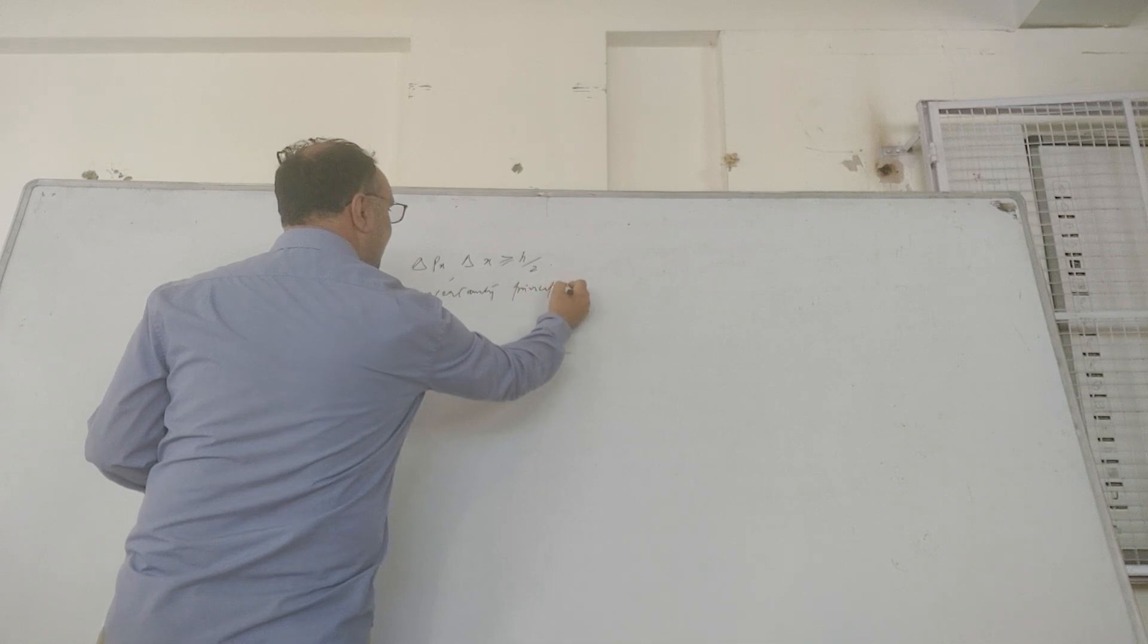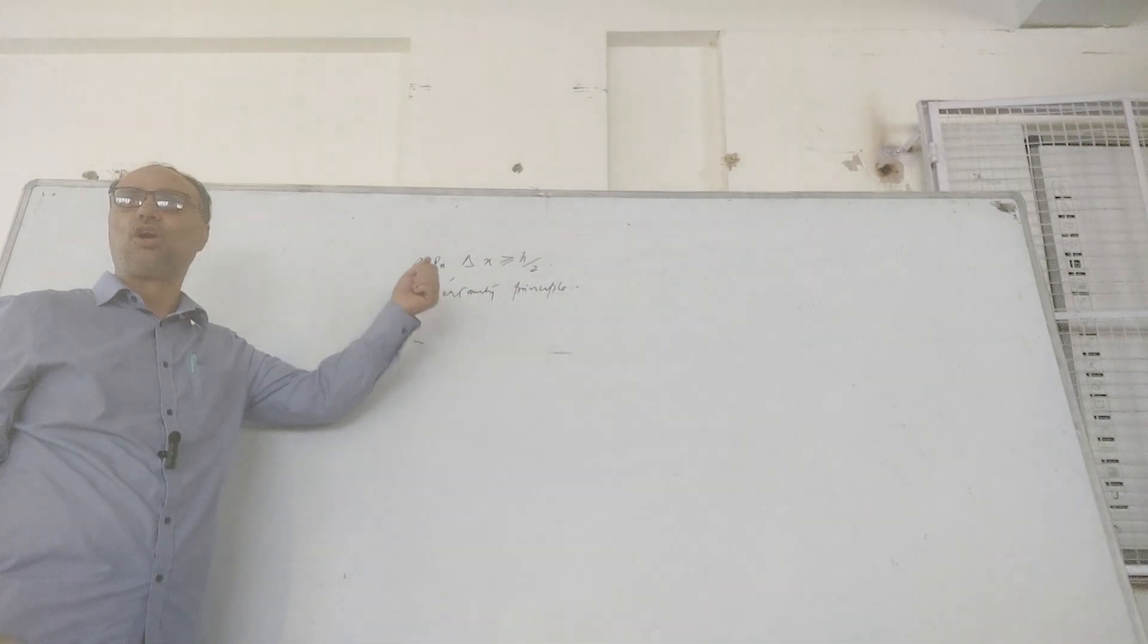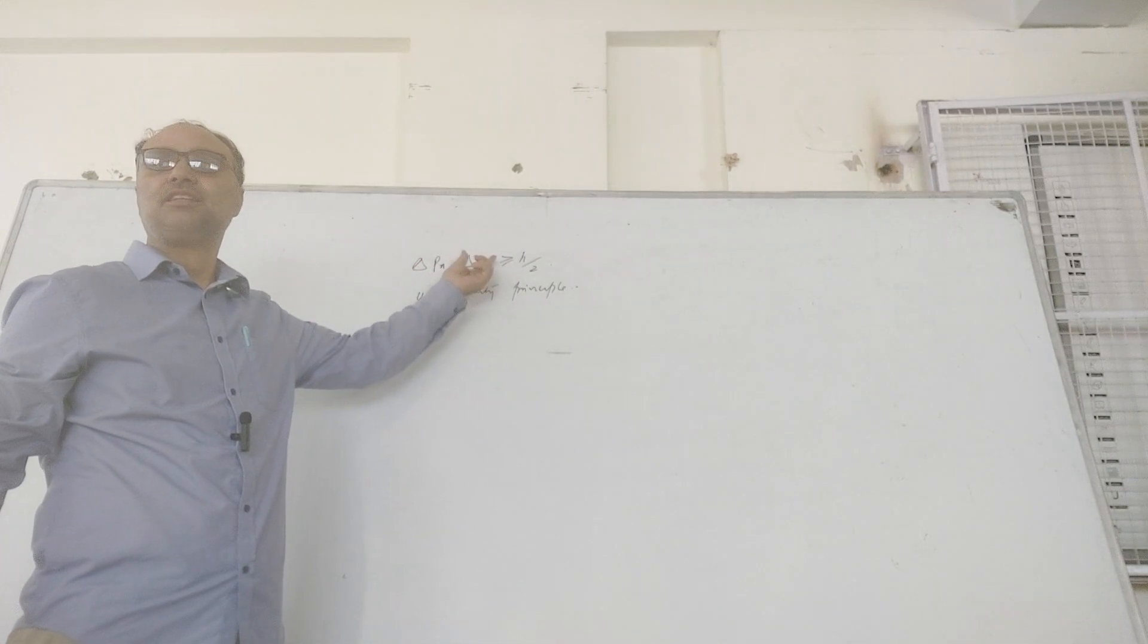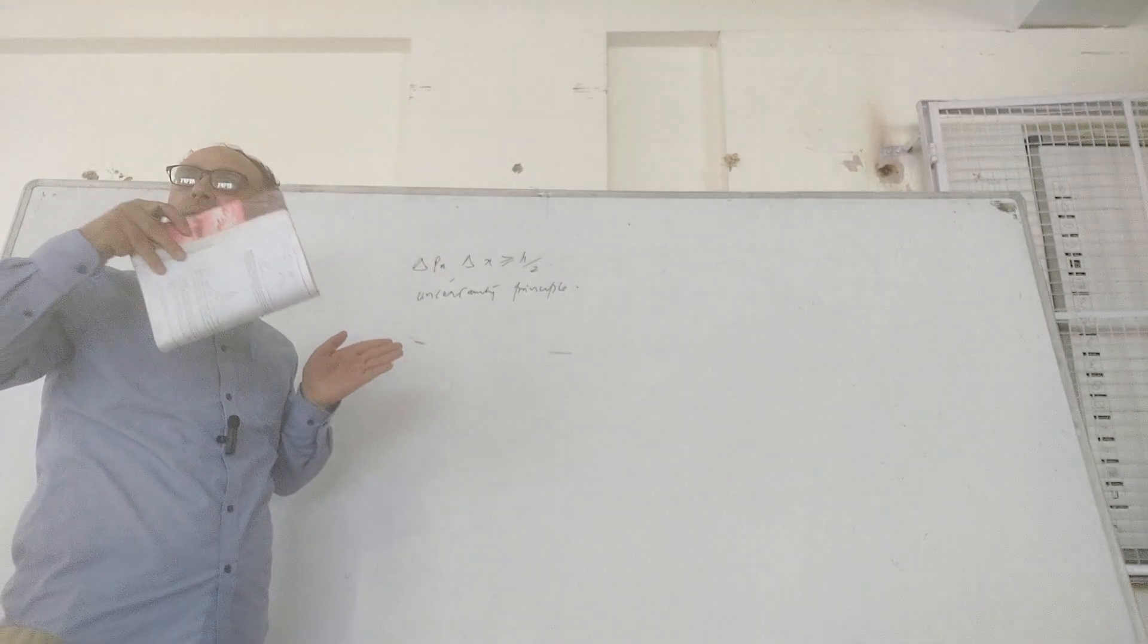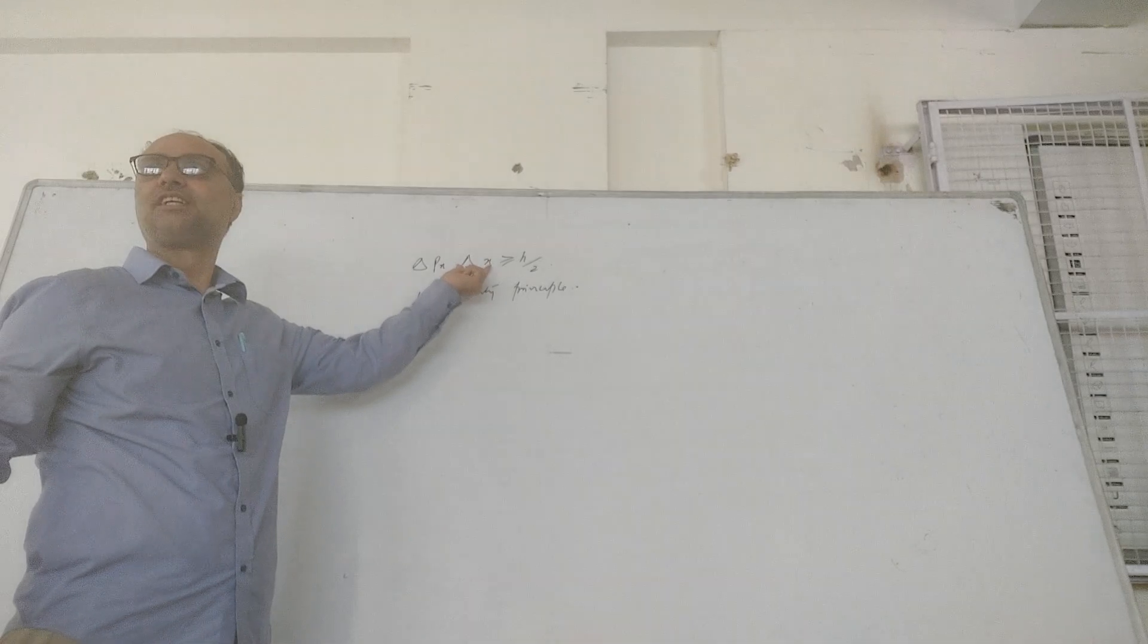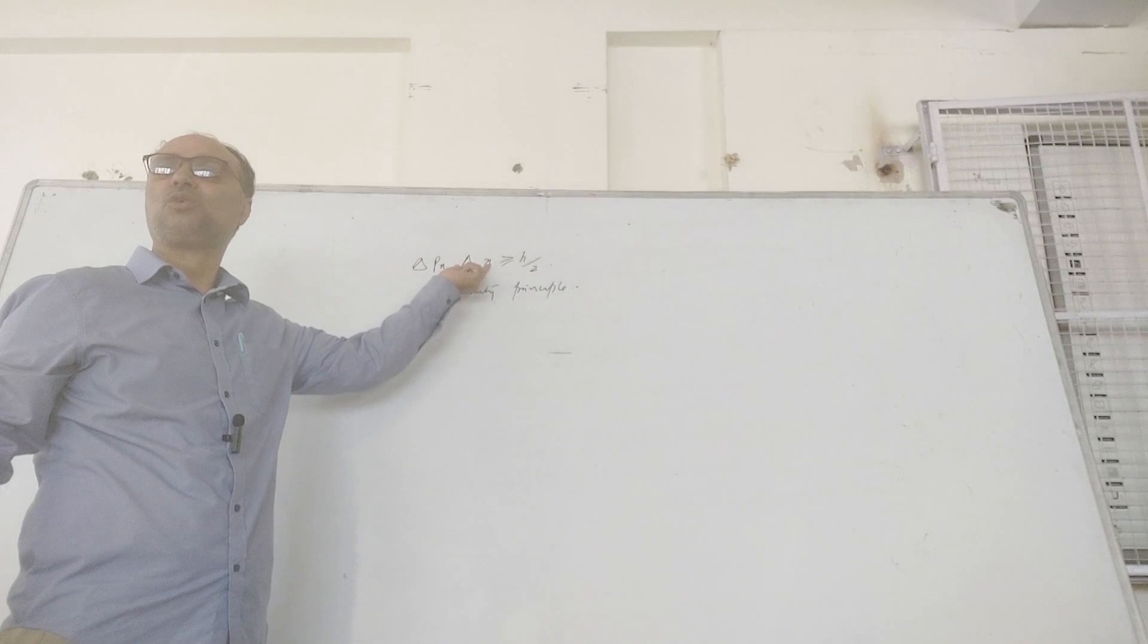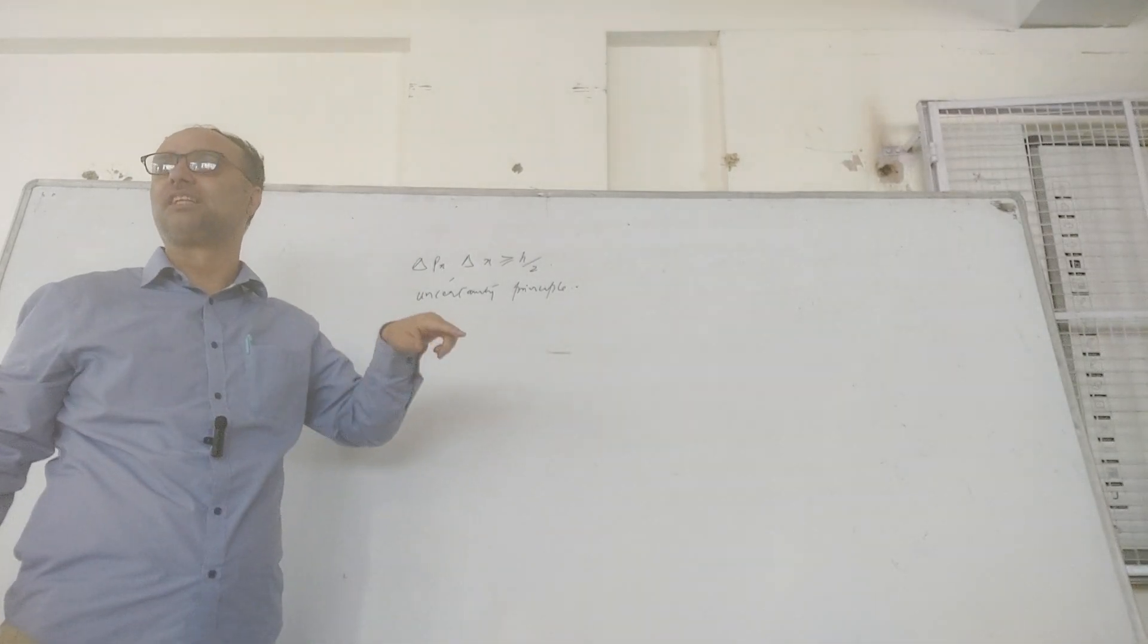So it states that if we want to measure momentum or position, if we want to concentrate on momentum in a very specific sense, where we conjugate the exact localization, it will be imprecise and vice versa.